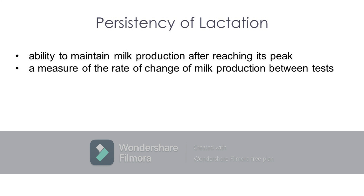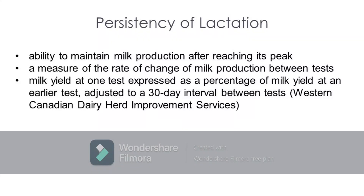As described by the Western Canadian Dairy Herd Improvement Services, persistency of lactation can also be described as milk yield at one test expressed as a percentage of milk yield at an earlier test, adjusted to a 30-day interval between tests.